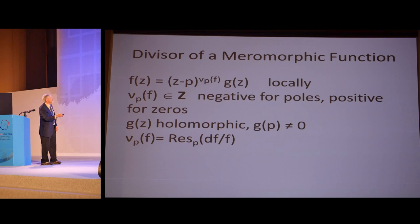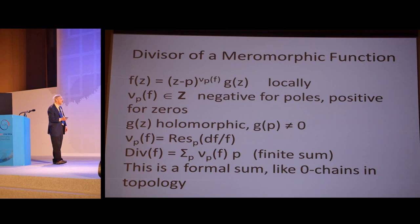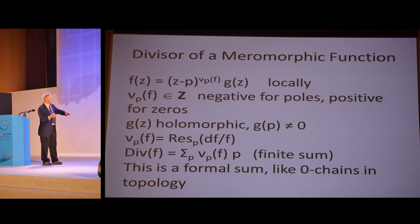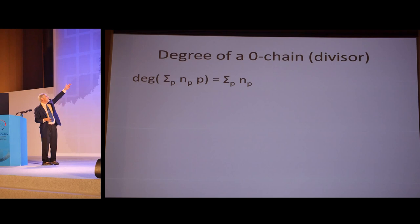If you have a meromorphic function, locally at p, you can always pull out some factor of z minus p. It may be one over (z minus p) squared if you have a double pole. It might be (z minus p) cubed if you have a triple zero times a function that locally is holomorphic and non-zero at p. If you take a formal finite sum here of these order of vanishing or poles times the point, this is called the divisor of f. It's a formal sum like zero chains in topology. Two of these are equal if the coefficients of every point are the same. This is an infinite dimensional space.